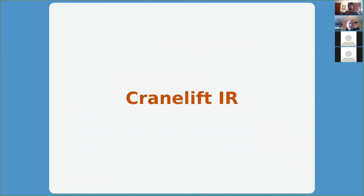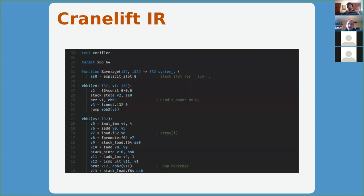Now I want to dive into CraneLift IR, the central data structure the code generator uses. It's an in-memory data structure, but we also have a textual representation and can go back and forth. The main unit is the function. CraneLift operates on a single function at a time, so you can compile functions in parallel. Inside the function is a sequence of stack slot declarations, then a series of basic blocks (EBBs — extended basic blocks), each containing a series of instructions doing arithmetic, memory access, or branching.